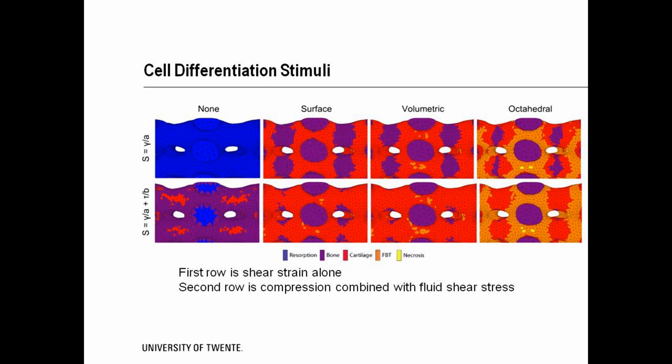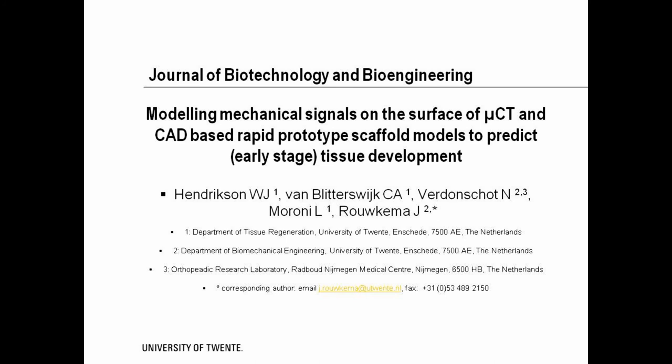Octahedral shear strain has a higher strain which results in more fibrous tissue and even cell death at some locations. For surface shear strain, the majority is cartilage with small parts of bone being present. For more information, please see our article in Biotechnology and Bioengineering or contact us through email. Thank you very much.